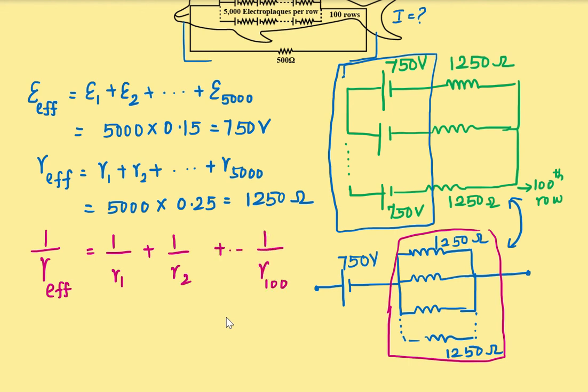So it will be, we know each one is 1250Ω. So we have to multiply it by 100. So you will have 100/1250Ω.